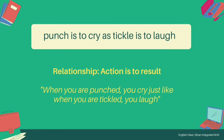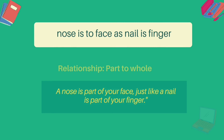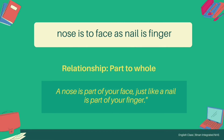Punch is to Cry as Tickle is to Laugh. Relationship: action to result. When you are punched, you cry, just like when you are tickled, you laugh. Nose is to Face as Nail is to Finger. Relationship: part to whole. A nose is a part of your face, just like a nail is part of your finger.